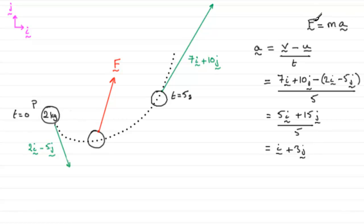It's easy now to get what F is. We know that F equals ma. M is 2 kilograms. So, therefore, we can say that F equals the mass, 2, times the acceleration, i plus 3j.